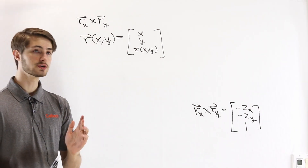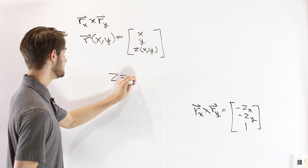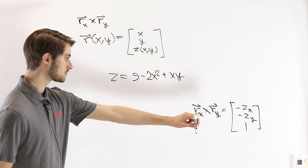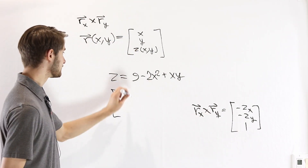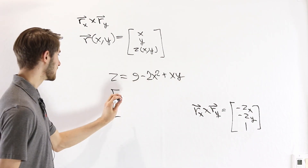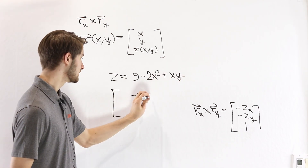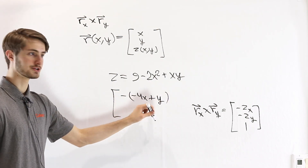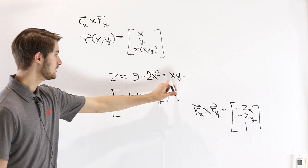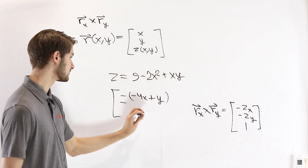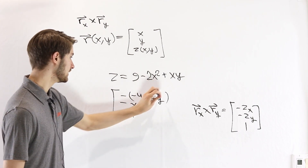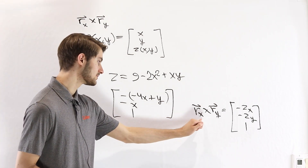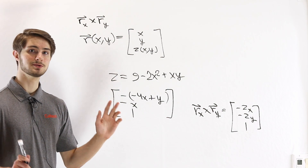As an example, let's say we're looking at the surface described by z equals 9 minus 2x squared plus xy. In that case, r_x cross r_y: first, the partial of z with respect to x is −4x + y, so the first component is the negative of that. The partial with respect to y is just x, so the second component is −x. The third component is 1. All we had to do was take the partial derivatives.